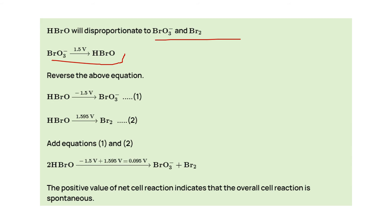If we reverse the above equation, we get these two equations. If we add them, this will be the combined equation. The positive value of net cell reaction indicates that the overall cell reaction is spontaneous. So our answer is HBrO.